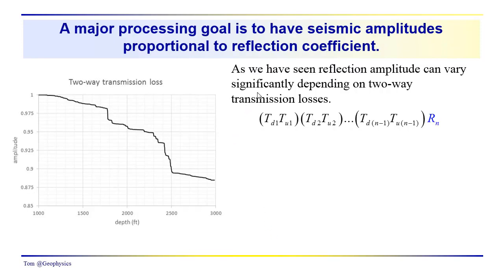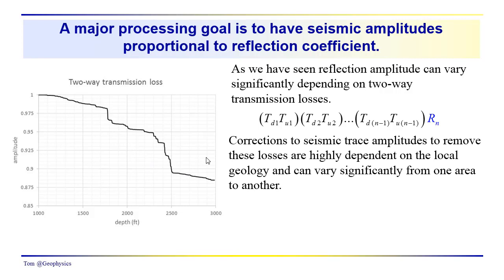When you look at a seismic section as an interpreter, you're probably assuming that reflection amplitudes are proportional to the reflection coefficient. But you should realize that the reflection amplitudes you see are not those of the reflection coefficient across a boundary — they're scaled versions associated with the down-and-up two-way transmission losses through each layer, all the way down and back up to the surface. So ideally, the processor has to do something to correct this data, to remove these losses — and that could be a difficult job.